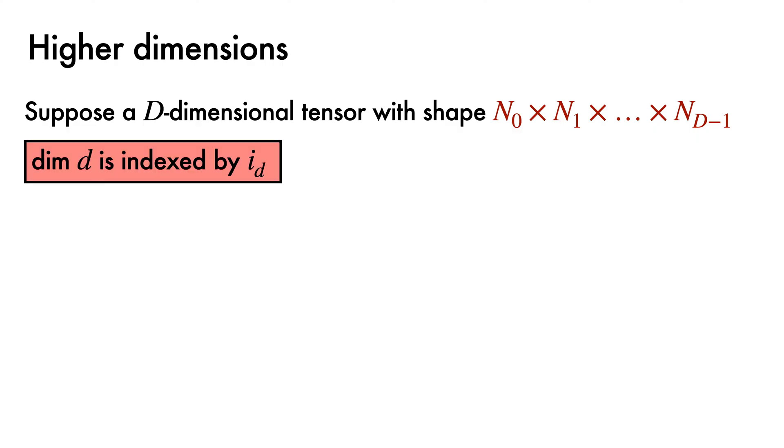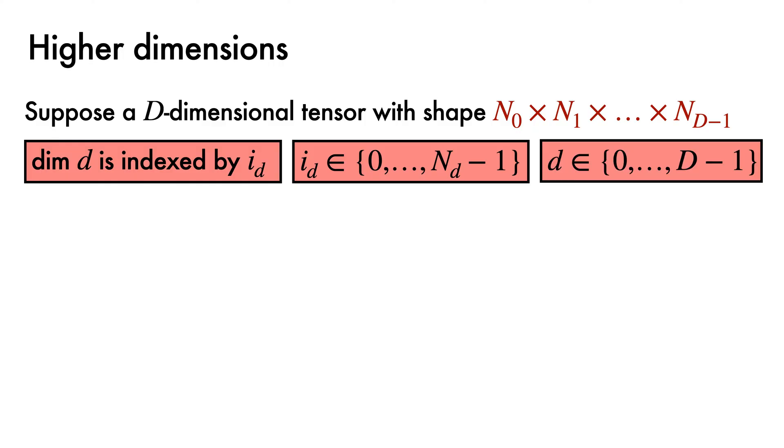So far we've talked about two-dimensional matrices, but sometimes we must venture bravely into higher dimensions where visualization is less help. Let's suppose that we have a d-dimensional tensor whose shape is N0 times N1 etc up to N d-1. Rather than using i and j for subscript indices, we're going to say that dimension d is indexed by the variable id, where id can take values between 0 and N d-1, and d can take values between 0 and D-1.